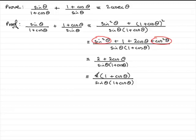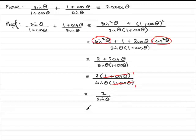We now have one term on the top made up of 2 factors: the 2 and the 1 plus cos theta. On the bottom we have sine theta and 1 plus cos theta. So we can cancel out 1 plus cos theta as a common factor, leaving us with 2 over sine theta. That is the same as 2 times 1 over sine theta, and 1 over sine theta is cosec theta. So we get 2 cosec theta — which is exactly what we needed to prove.